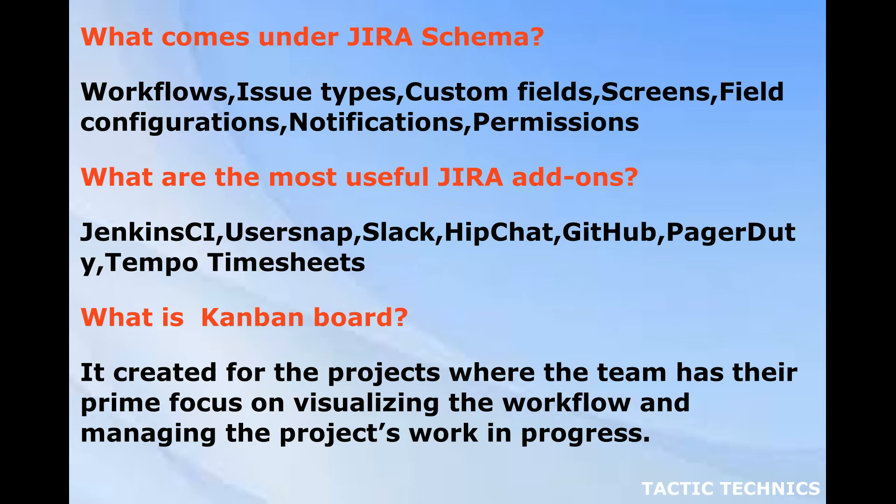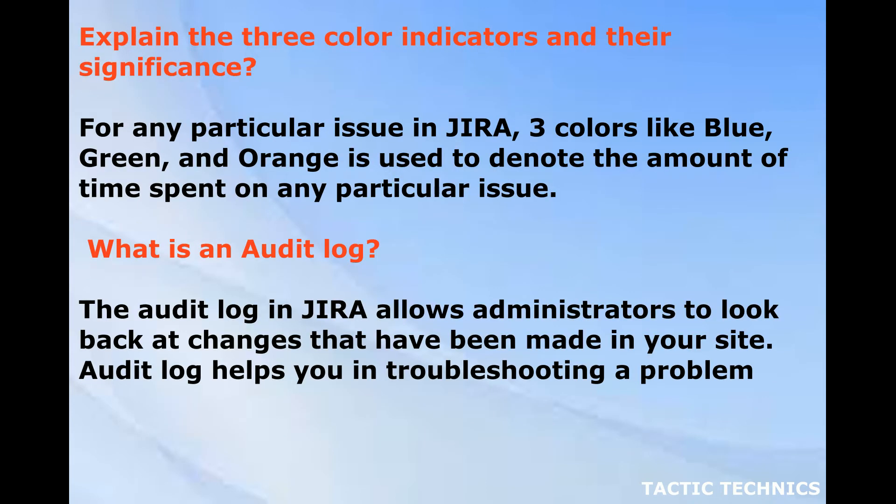Explain the three color indicators and their significance for any particular issue in Jira. Three colors — blue, green, and orange — are used to denote the amount of time spent on any particular issue.